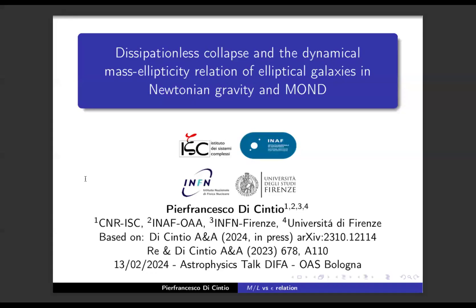This meeting is being recorded. It's a pleasure to introduce Francesco Di Scintio. He was a student here in Bologna, graduating in 2009 with work on relaxation. He then did his PhD in Dresden at the Max Planck Institute for Physics of Complex Systems, followed by postdocs in Italy, France, and elsewhere. He is now a permanent researcher at the CNR Institute for Complex Systems in Florence. Today he will talk about collapse and predictable galaxies.